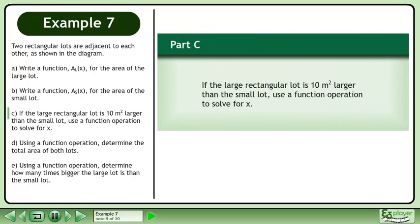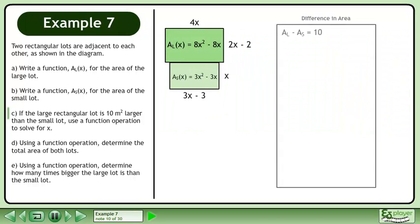Now we'll move on to Part C. If the large rectangular lot is 10 square meters larger than the small lot, use a function operation to solve for x. We can use a subtraction function operation to solve this problem. The area of the large rectangle minus the area of the small rectangle is 10 square meters.